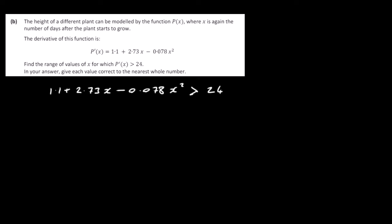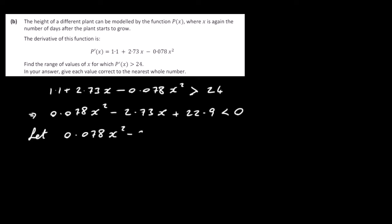Let's bring everything over to one side. Rearranging 1.1 plus 2.73X minus 0.078X squared greater than 24, and changing all the signs, we get 0.078X squared minus 2.73X plus 22.9 less than 0. This is effectively a quadratic inequality. The first step is to find the roots, so we set 0.078X squared minus 2.73X plus 22.9 equal to zero.